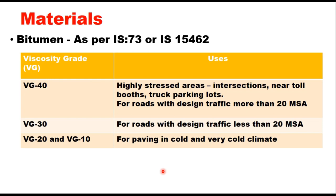Guidelines given in IRC 37 and MORTH specifications state that VG 40 is suitable for highly stressed areas like intersections, near toll booths, truck parking loads, and also for roads where design traffic is more than 20 million standard axles. When the design traffic is less than 20 MSA, VG 30 can be used. VG 20 and VG 10 are soft grade binders and they are generally used for paving in cold and very cold climatic conditions.